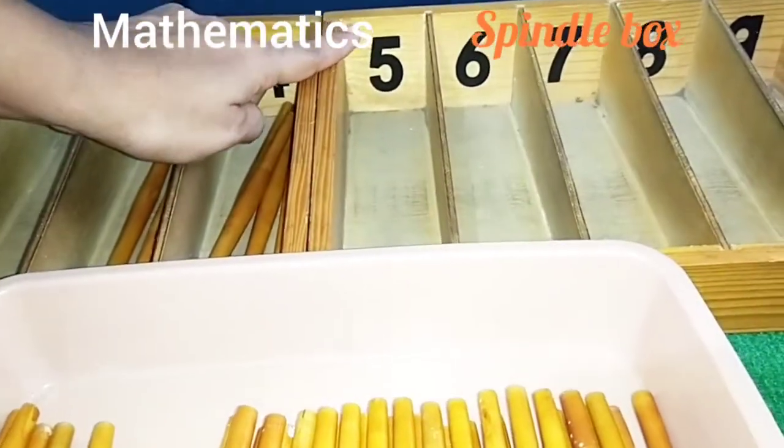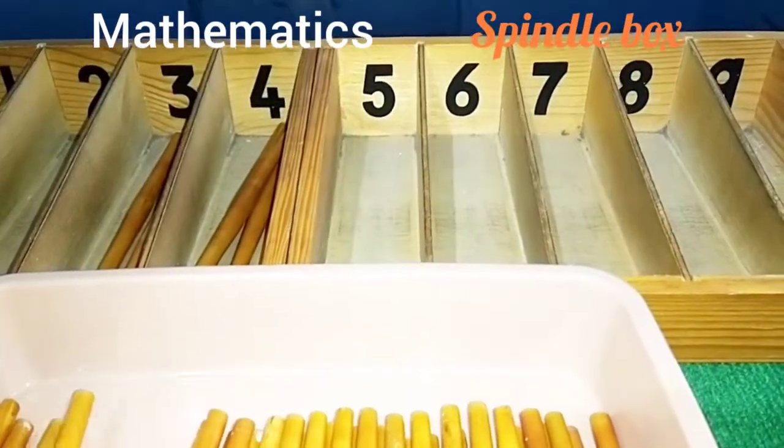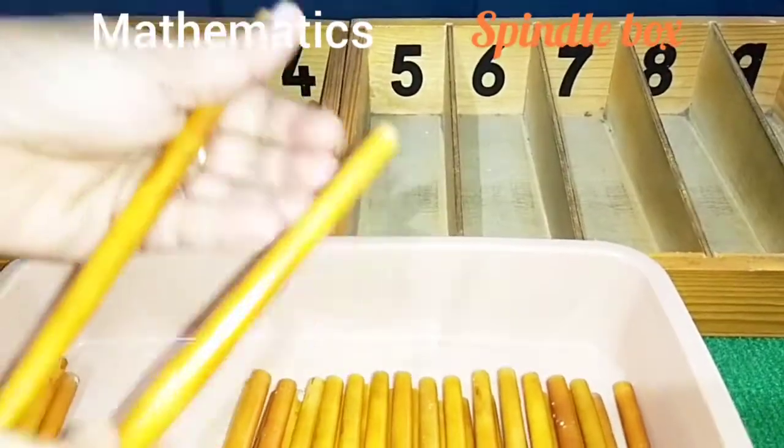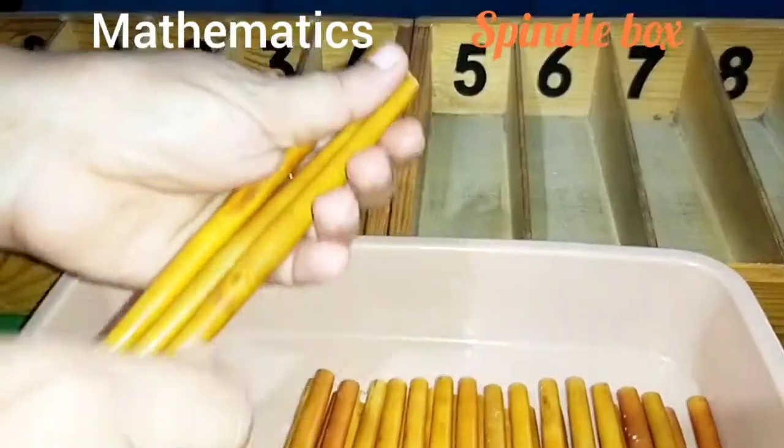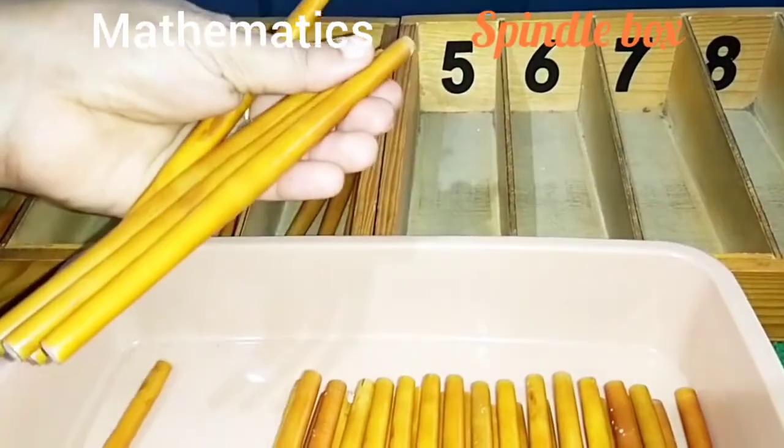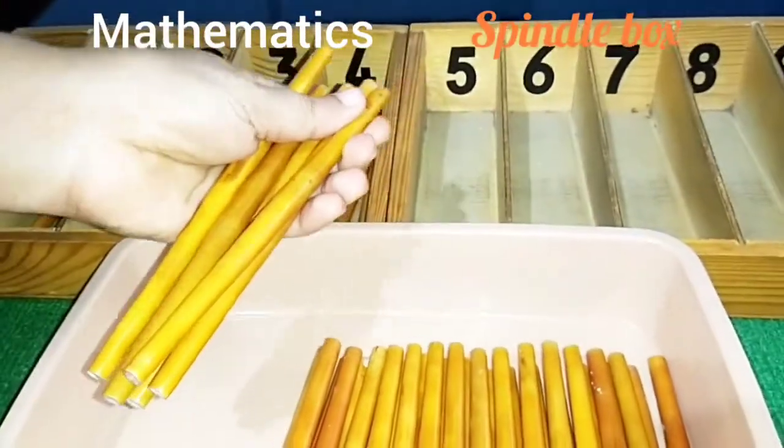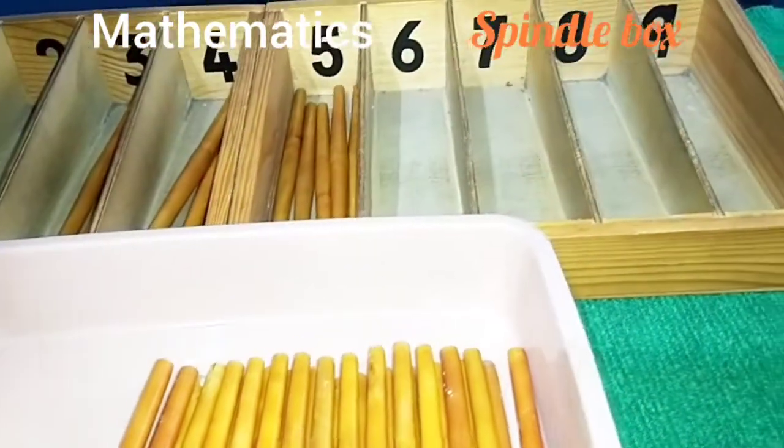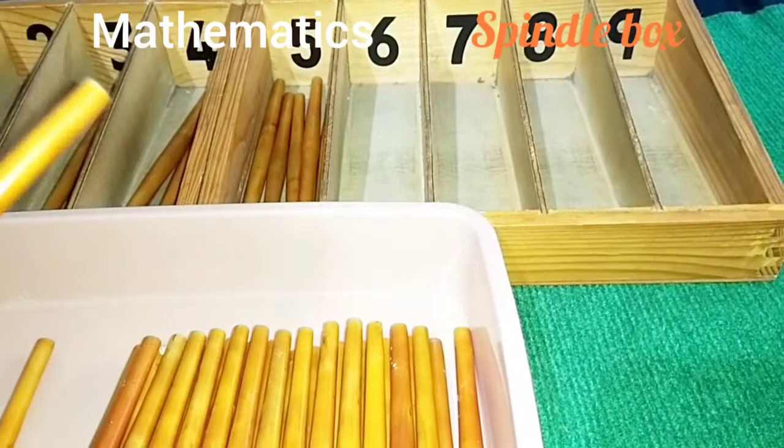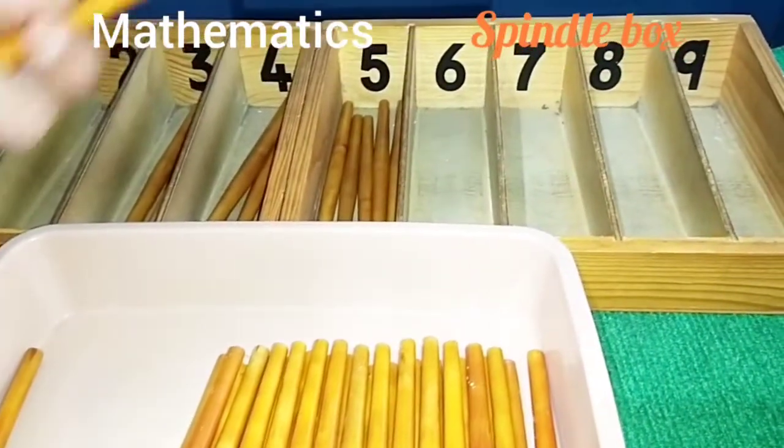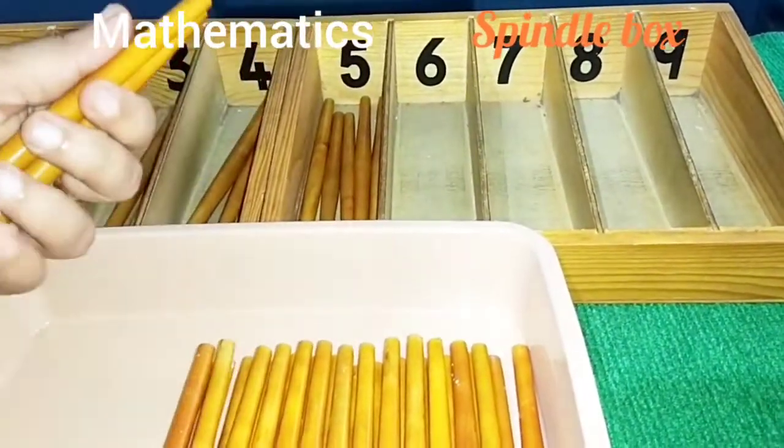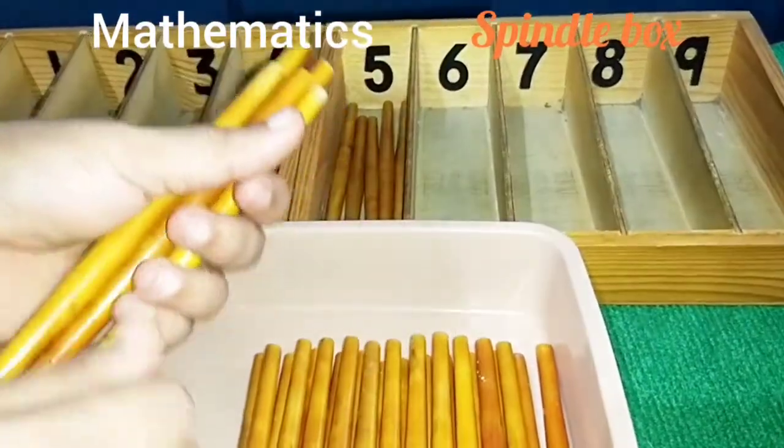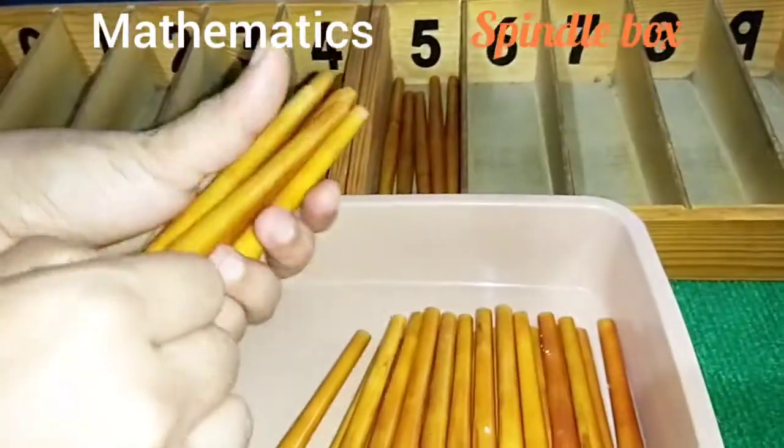What is next? Five. Take five spindles and put into this compartment. One, two, three, four, and five. What is next? Six. Six. Take six spindles and put into this compartment. One, two, three, four, five, and six.